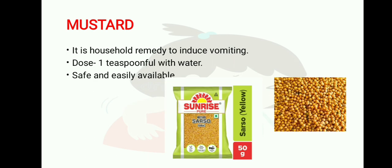Next is mustard. It is the mustard seeds commonly used in the kitchen. It is a household remedy to induce vomiting — dose is one tablespoon in water; it is safe and easily available. Mustard seeds produce irritation in the stomach, which helps to induce vomiting.